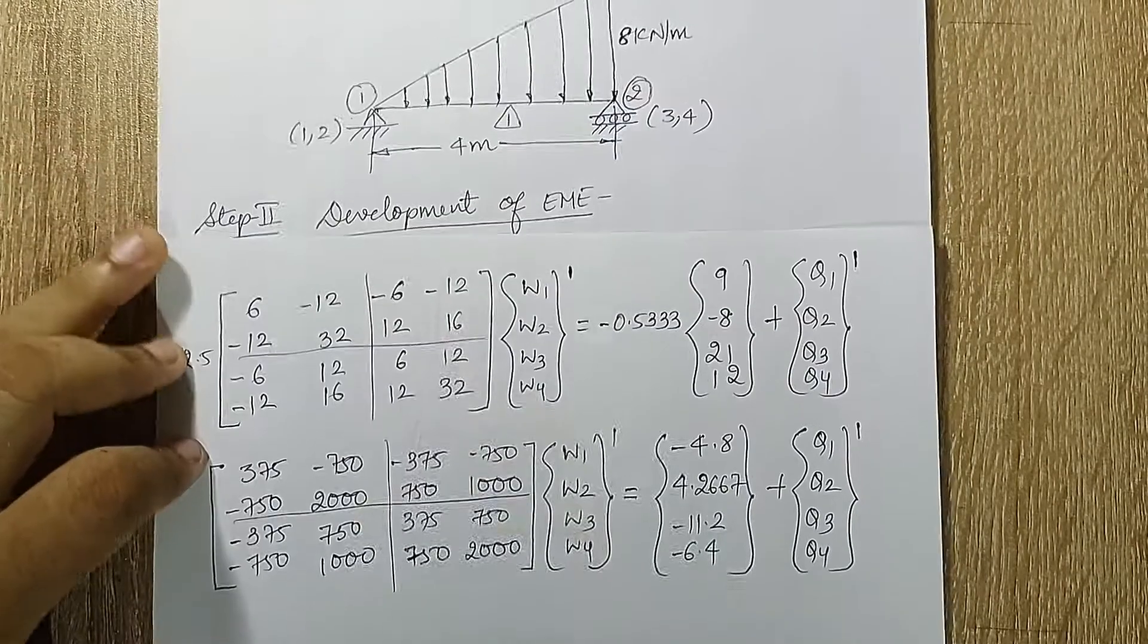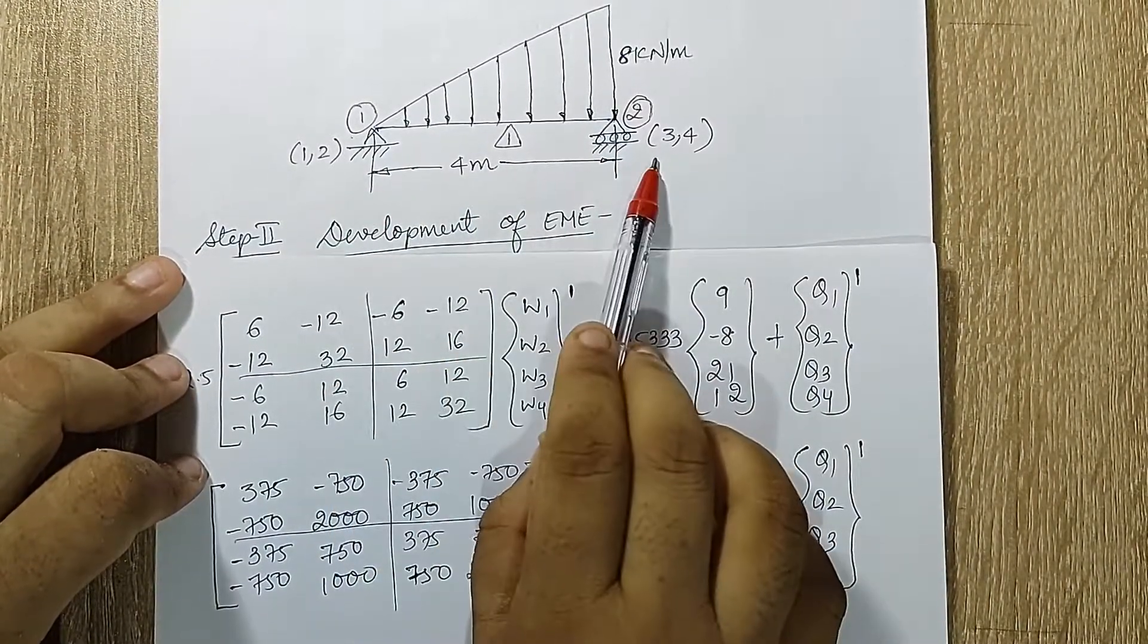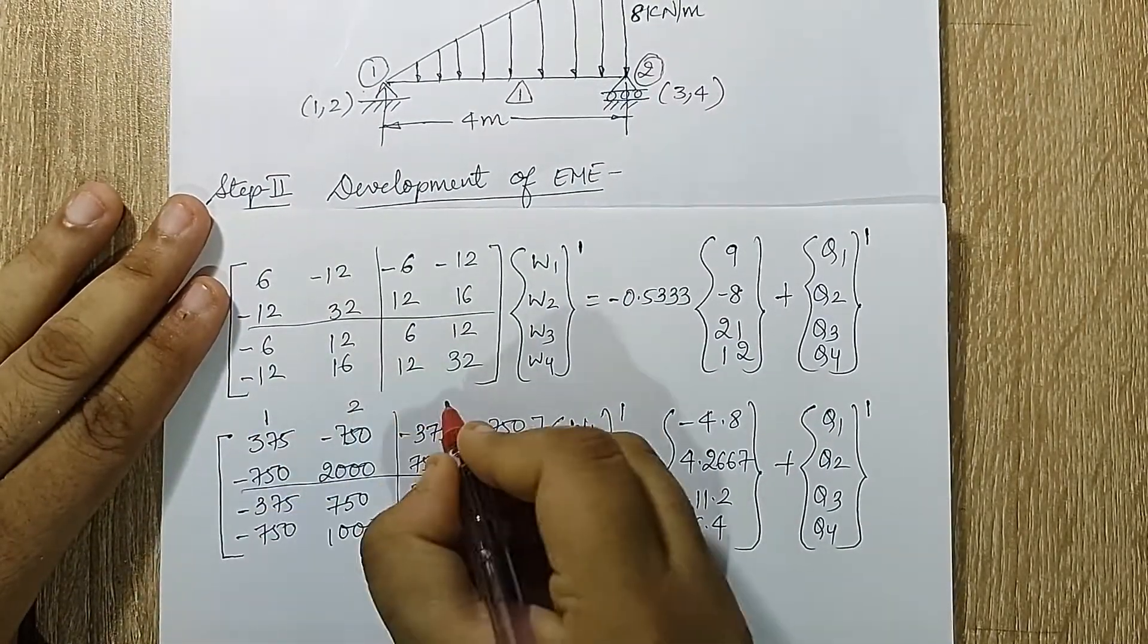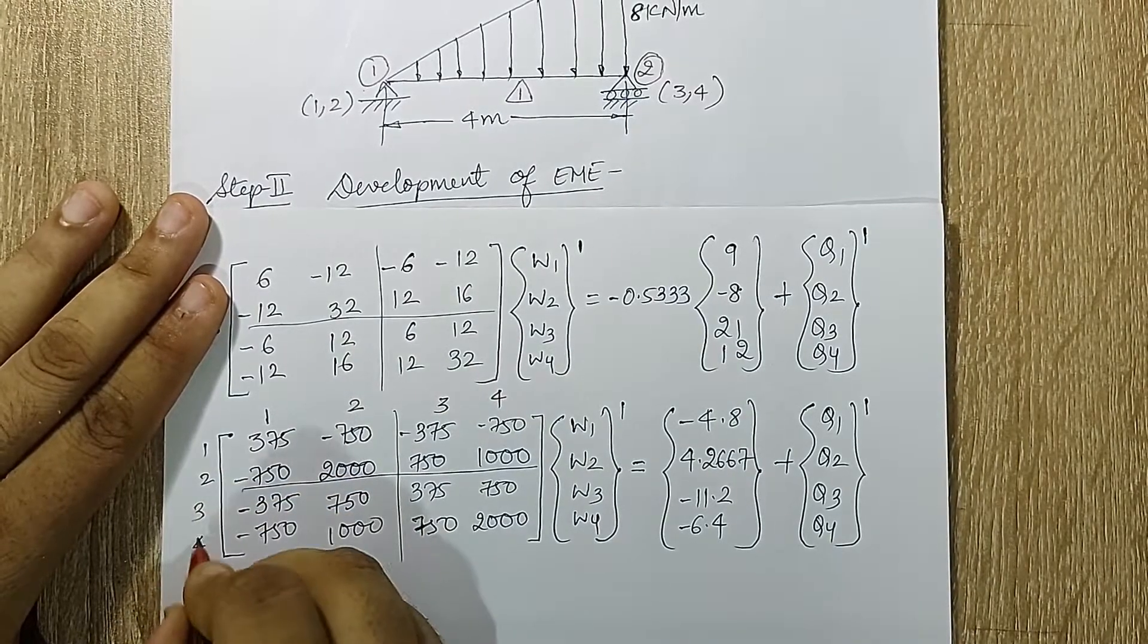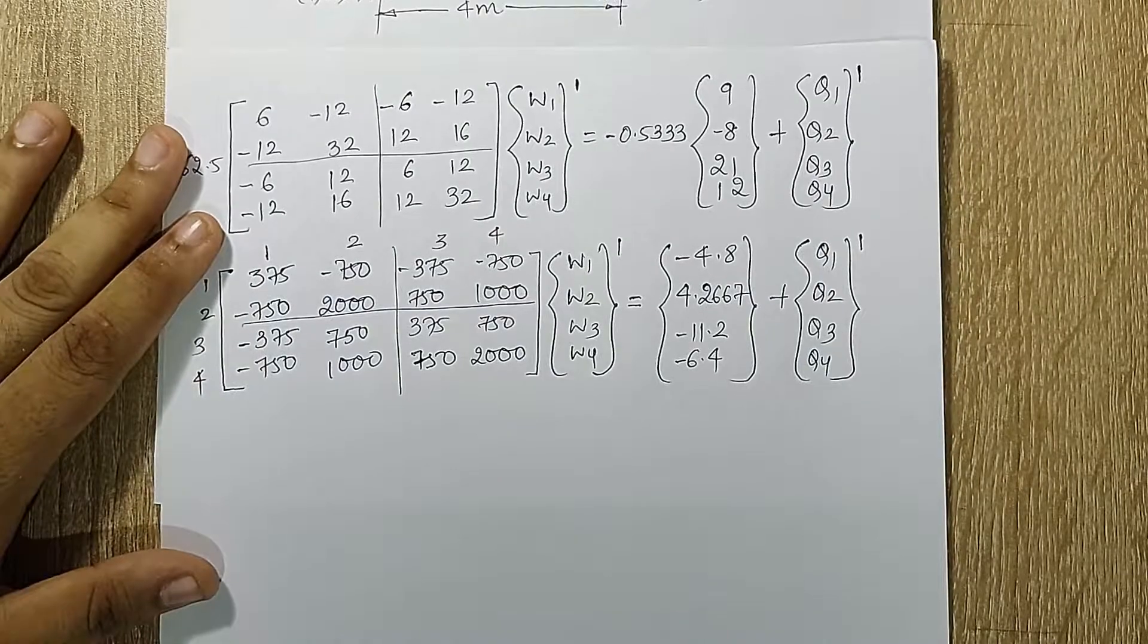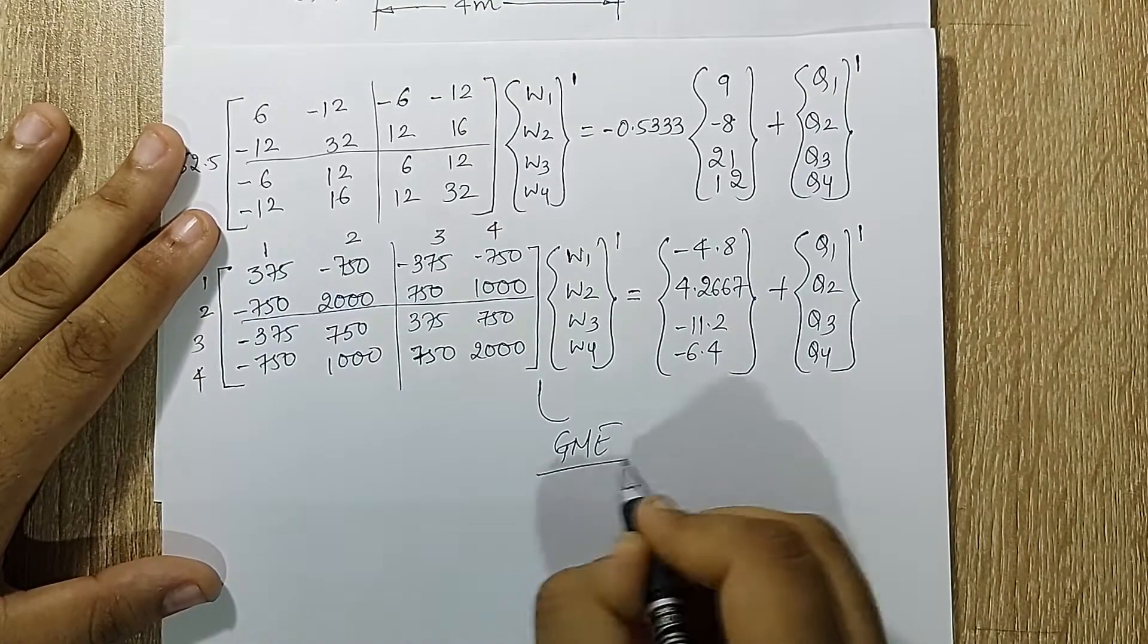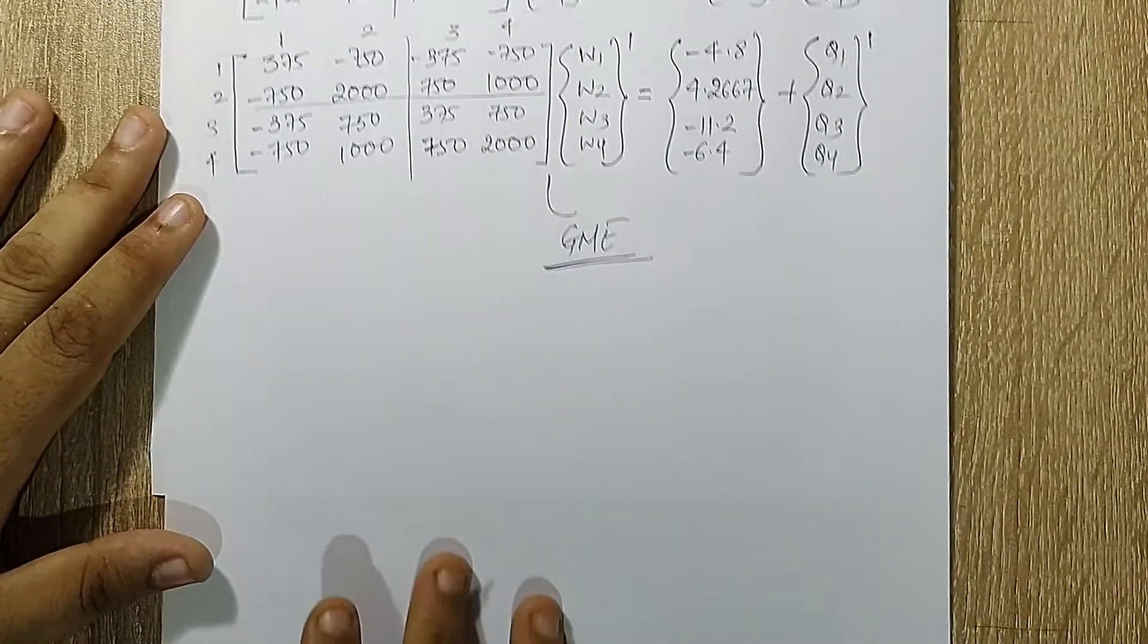This is the matrix that I obtain. If you observe, element 1 is between node 1 and 2. It has 1, 2, 3, 4 as degrees of freedom. So here I'll write down 1, 2, 3, 4. Now this equation is the EME. If you talk about the GME, this is the same equation which will be my GME because I have only one element. So my third step here will be imposing of boundary conditions.